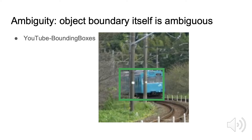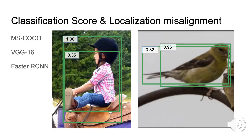Current state-of-the-art object detectors rely on bounding box regression to localize objects. However, these ambiguities are not modeled in today's framework. Besides, the current bounding box regression is assumed to be accurate when the classification score is high, which is not always the case. On the right side, you can notice that the bounding box with a higher classification score is not actually well localized, whereas the bounding box with a lower classification score is well localized.